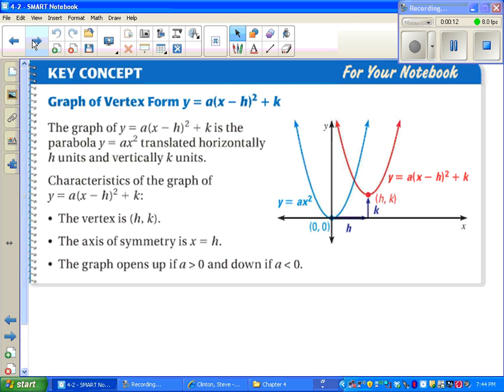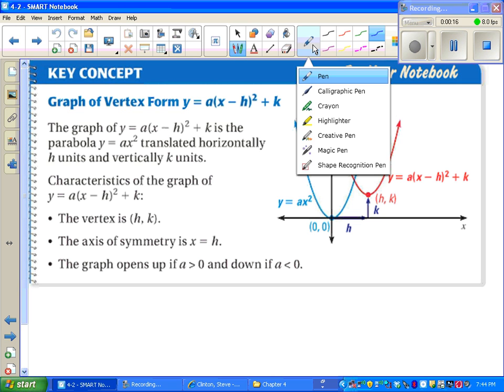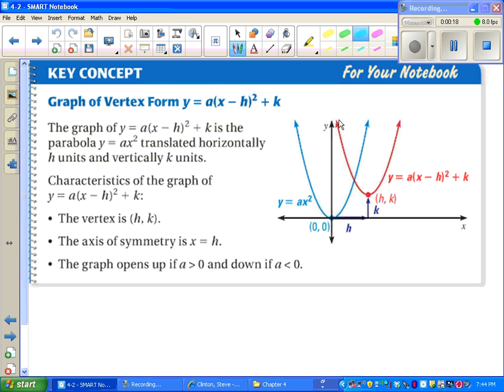Let's talk about vertex form first. It should look really familiar from when we graphed absolute value equations. I've got an H and a K. Just like on absolute values, notice the formula says minus H and plus K. We change the sign on H. We leave the sign the same on K.